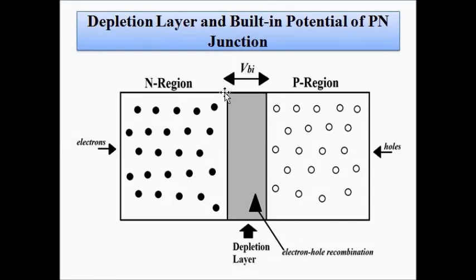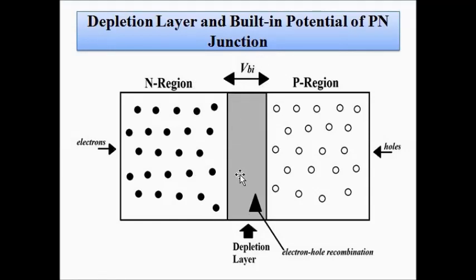Because of this electron-hole recombination, this region is depleted of mobile charge carriers and is called the depletion region or depletion layer. Due to this region, an electric potential is developed around the depletion layer in the direction opposite to the forward bias voltage. This is called the built-in potential, and it must be overcome by the forward voltage for current conduction to take place.